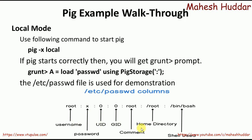Once you get the grunt prompt, you can start writing your commands. If you want to load this particular file, the command is: A = LOAD 'passwd' USING PigStorage(':'); The load command takes the file name, and you use PigStorage and specify the delimiter — in this case, it is a colon. Sometimes the delimiter may be a space or tab, depending on your file. Based on the delimiter, each field of every line in the file will be loaded into variable A.